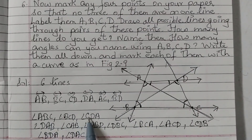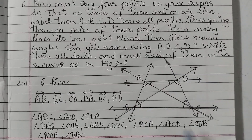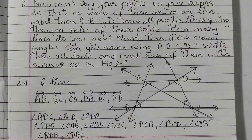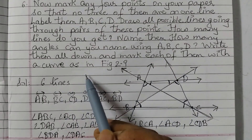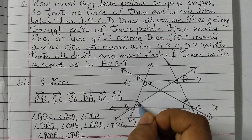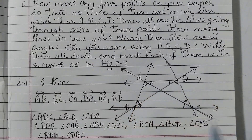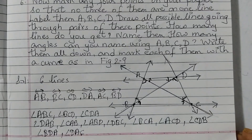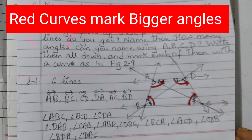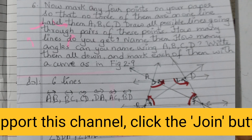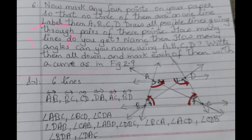So let us count all the angles: 1, 2, 3, 4, 5, 6, 7, 8, 9, 10, 11, 12. We have 12 angles in total that we can name using letters A, B, C, D. Write them all down and mark each with a small curved arrow to show the amount of rotation, in any direction, as in figure 2.9. With this we are done with question number 6 and we complete all the questions from the figure it out section on pages 19, 20, and 21. See you all in the next video.